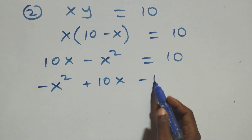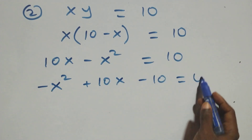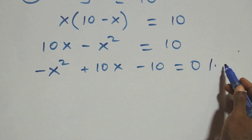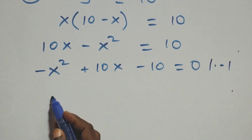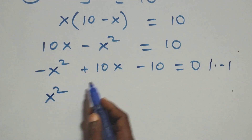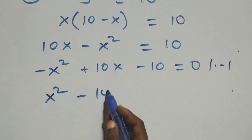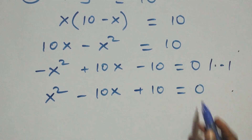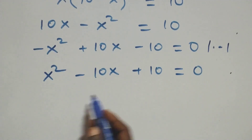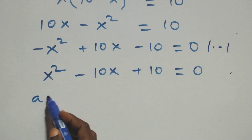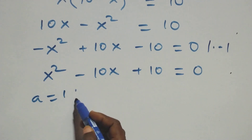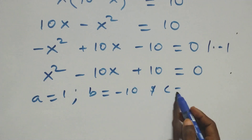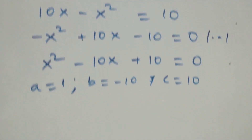Rearranging gives minus x squared plus 10x minus 10 equals to 0. Multiplying through by minus 1, we get x squared minus 10x plus 10 equals to 0. This is a quadratic equation where a equals 1, b equals minus 10, and c equals 10.